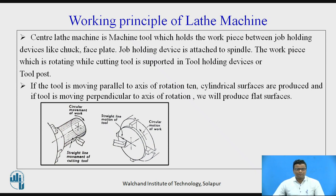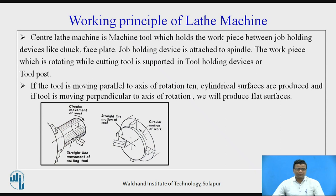The workpiece or job is rotating, while the cutting tool is supported by the tool holding devices. The tool holding devices are called the tool post. In most lathe machines, a square tool post is used, meaning four tools can be used at a time for the cutting operation. Mainly the lathe machine is used for the removal of material — mainly metal — so this is called a metal removal process.